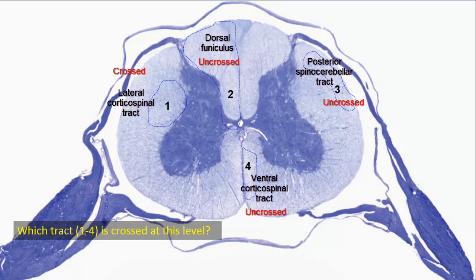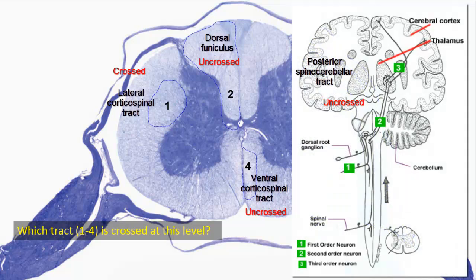It should be remembered that the fibers of 4, the ventral corticospinal tract, will eventually cross at segmental levels by traversing the anterior white commissure to synapse with contralateral anterior horn cells. Thus the whole pyramidal pathway is crossed, but here the fibers in 4 are not crossed. Fibers in 2, in the dorsal funiculus, form the dorsal column medial lemniscus system, which as a pathway is crossed, but the crossing involves axons of second-order neurons located in the medulla, not the first-order neurons present here. The dorsal spinocerebellar tract is uncrossed and will remain uncrossed until it ends in the cerebellum via the inferior cerebellar peduncle.